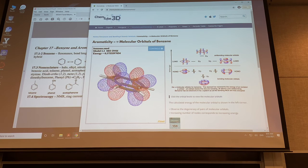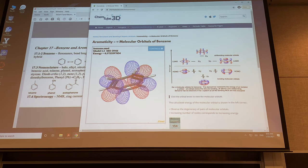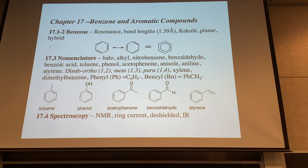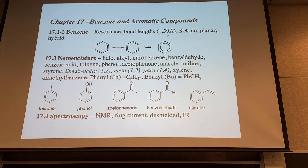We'll use the MO treatment toward the end to get a better handle on why benzene is stable — aromaticity — and why there's a separate chapter on benzene. We saw resonance stabilization with butadiene of about four to five kcal per mole. With benzene it's going to be much more, and it's going to affect the structure and the reactivity. It's not just benzene — there's a whole host of other compounds that fall into this category of aromatic compounds.